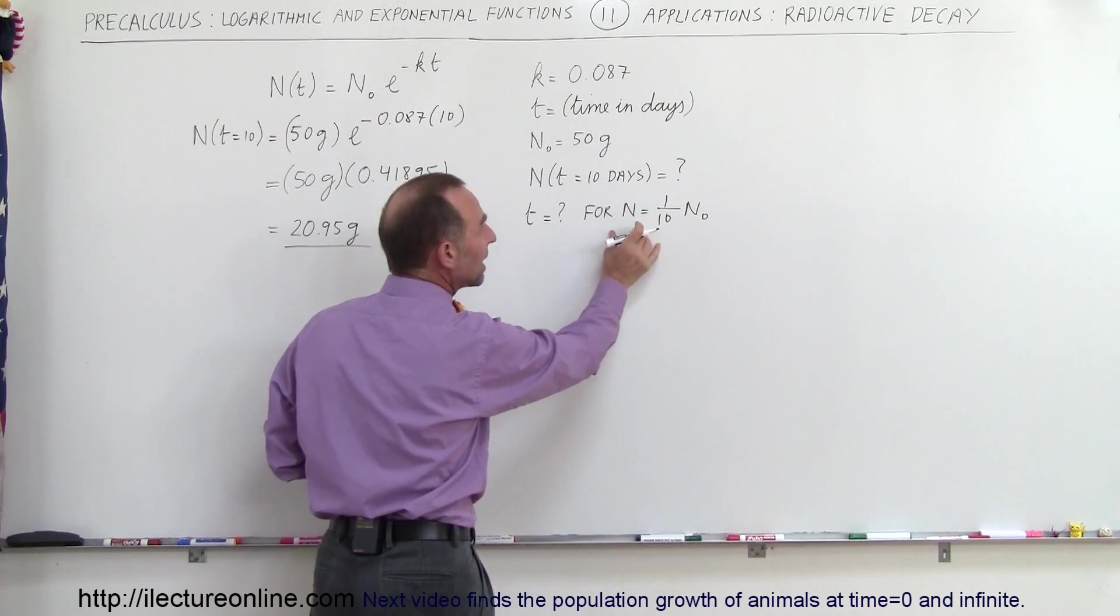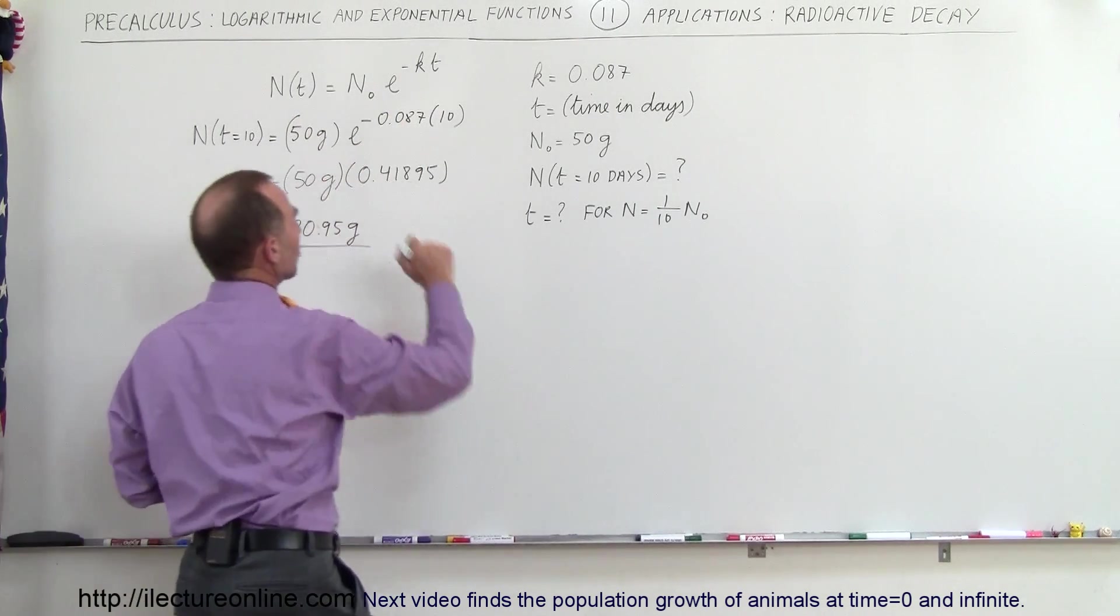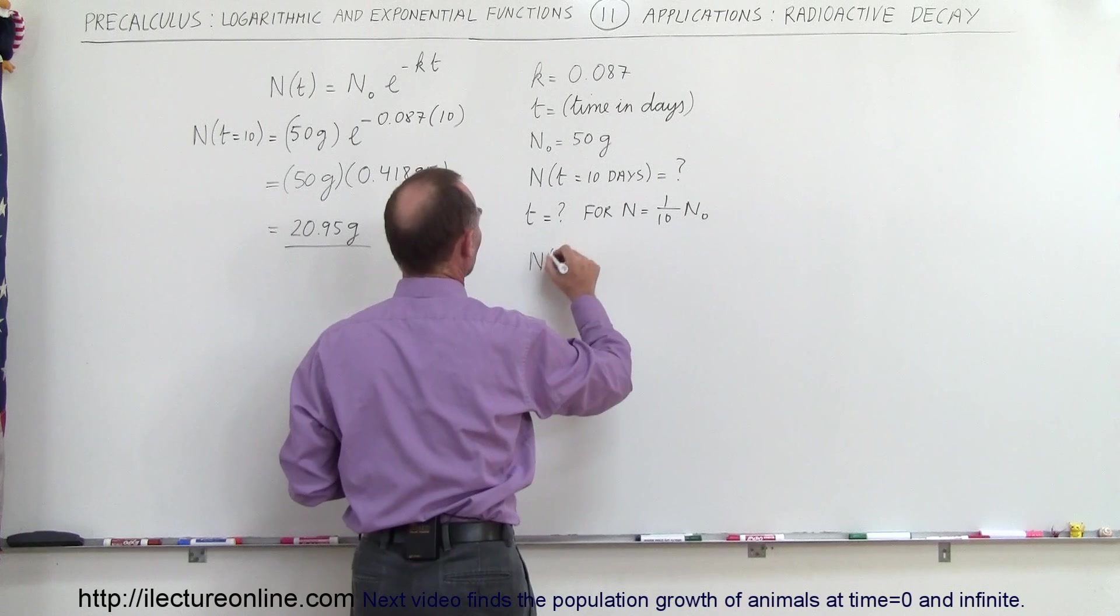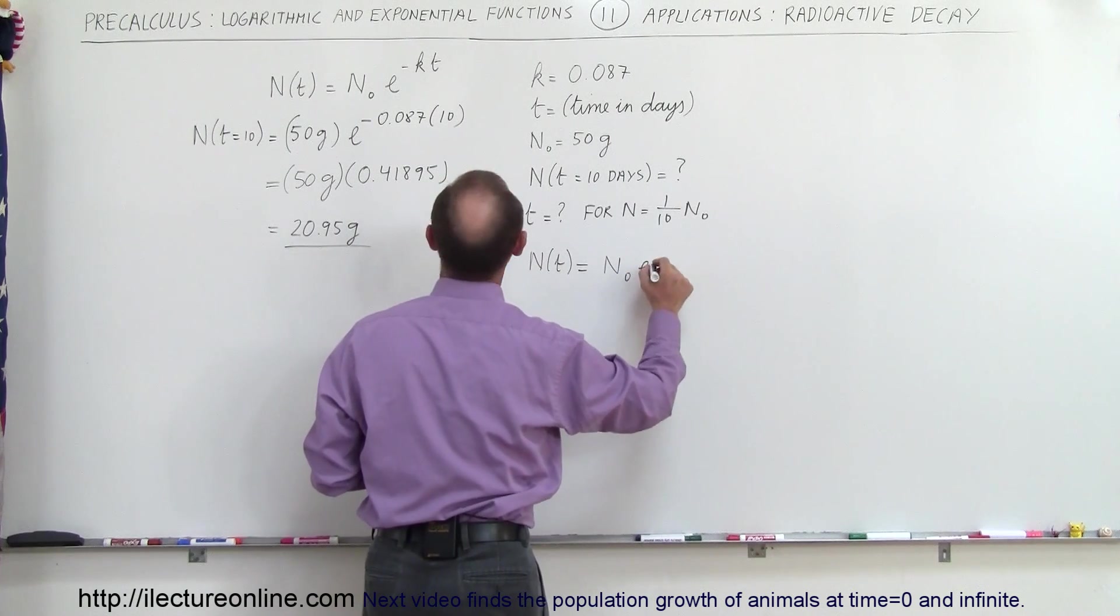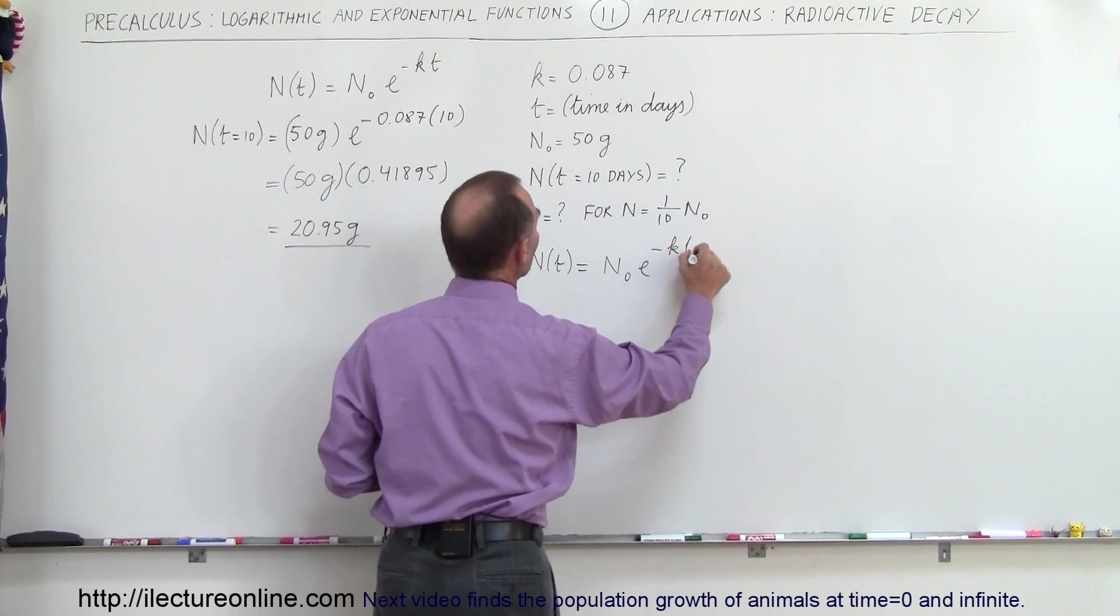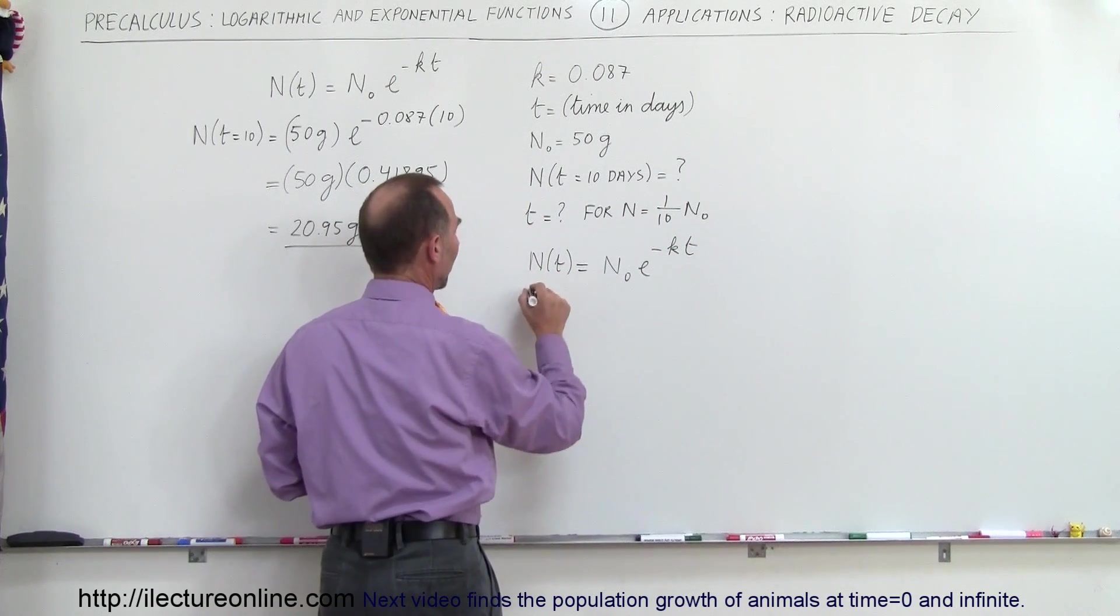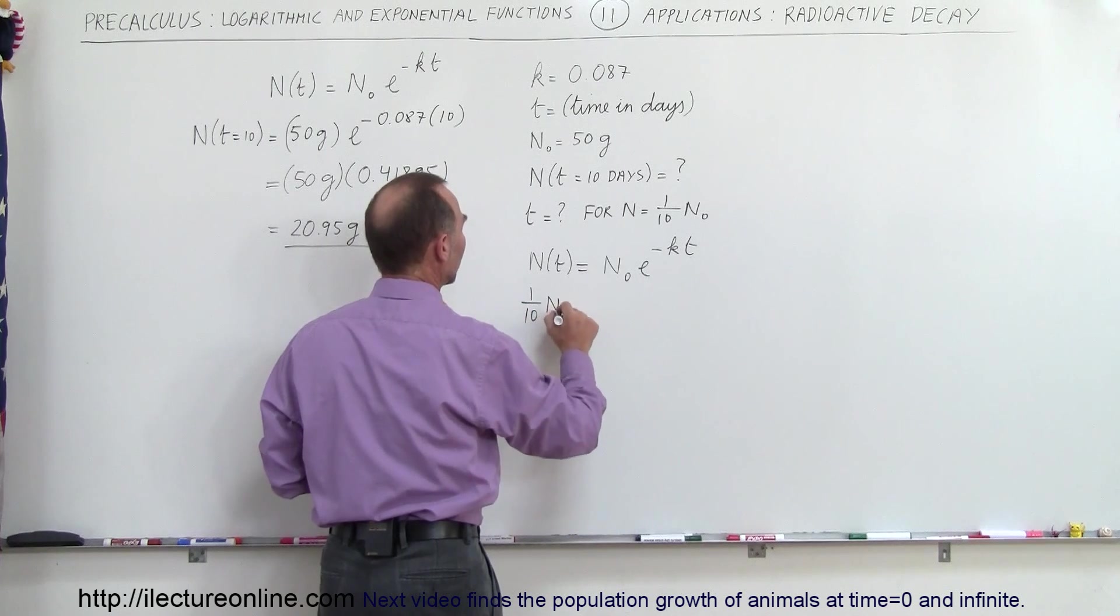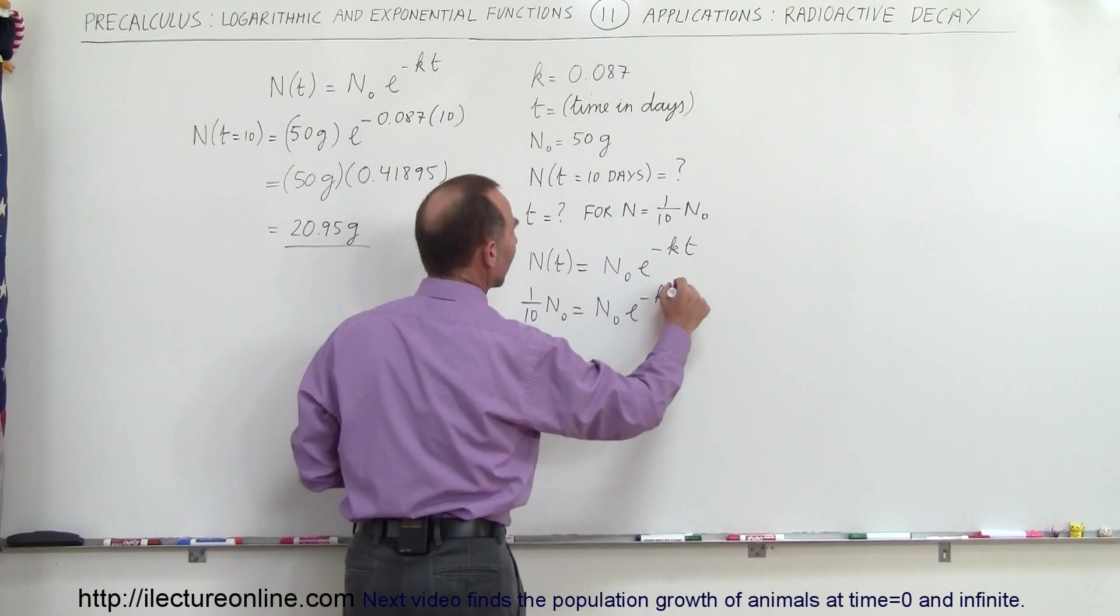So for that again we start with the equation, so n as a function of time is equal to the initial amount times e to the minus kT. Now this is going to become one tenth of the original amount, so we have one tenth, the original amount is equal to the original amount times e to the minus k times T.